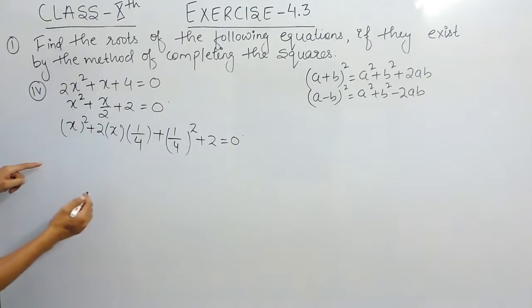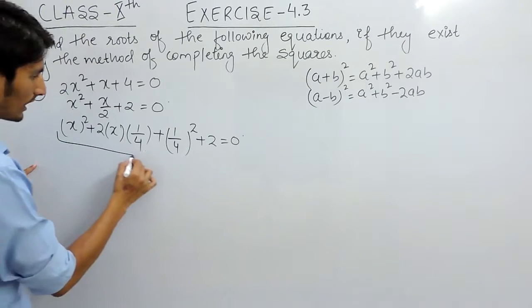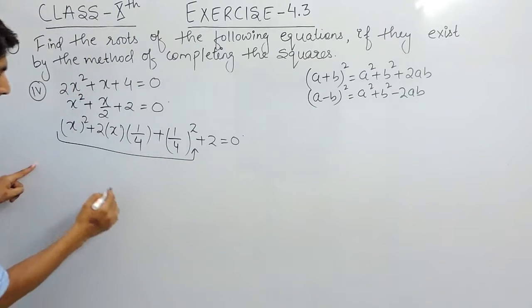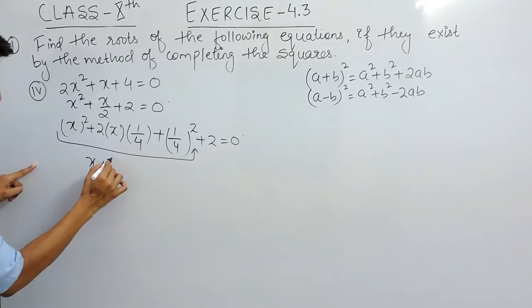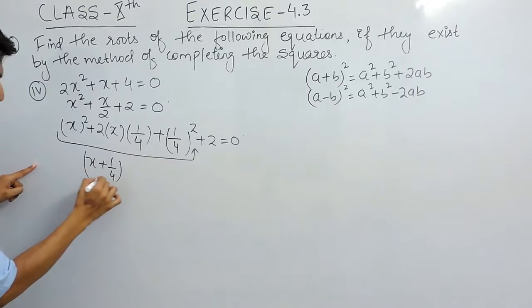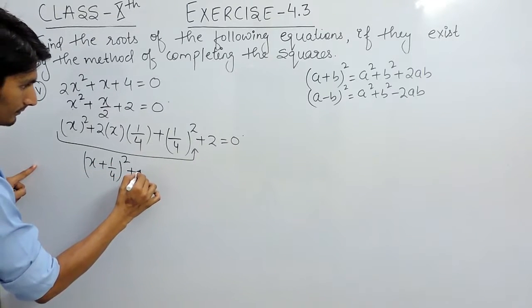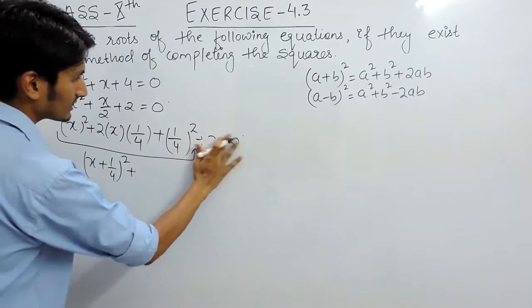And positive 2 will remain as it is. So this value is equal to 0. So we have a square plus b square plus 2ab. So in place of this we can write a plus b whole square. And one thing is important again.